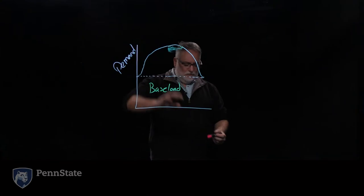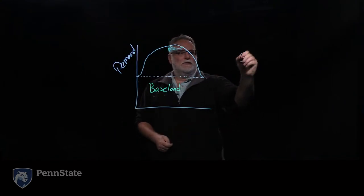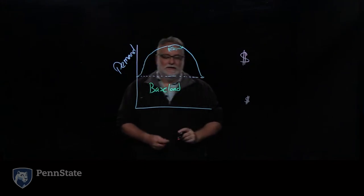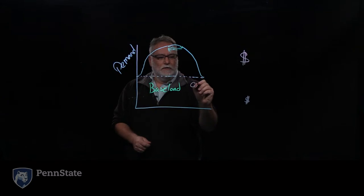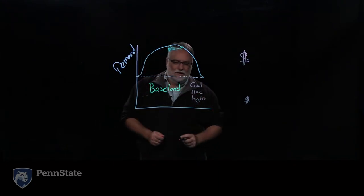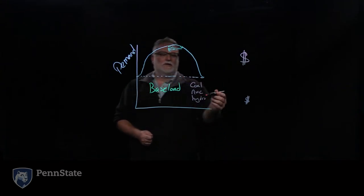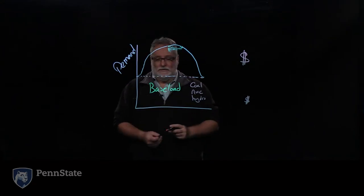So what do we use for the baseload? Well for our baseload, we want to use the cheapest electricity. So here, in the old days, that would be very much a combination of coal, nuclear, and hydro. Now we're limited in how much hydro we have in many locations. We're limited in how many nuclear power plants we have. And so we had a bit more flexibility in the number of coal-fired power plants that are producing electricity.